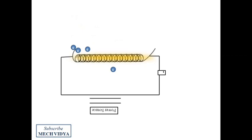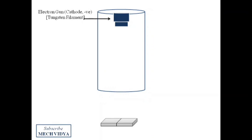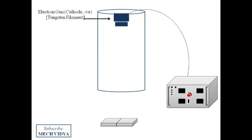One thing we have to understand is that energy emitted from a bulb is actually scattered in all directions. But to weld metal, we need focused energy — that means millions of electrons should fall on a small area. So let us see how we can achieve this. Suppose we want to weld these two workpieces. First we will introduce an electron gun from which the electrons will be emitted. It is basically a filament which is connected to the negative terminal of the battery, so when current passes through the filament, millions of electrons will start coming out of the electron gun.